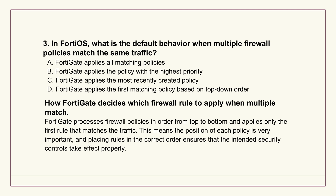Now for firewall logic - this is core stuff. Policy processing. Question three asks about the default behavior: if you have multiple firewall policies and more than one could match the same traffic, what does FortiGate do? According to the source explanation, the default is pretty straightforward but super important - it applies the first matching policy it finds. And the explanation stresses how it finds it: it reads the policy list from top to bottom. So order matters - a lot.